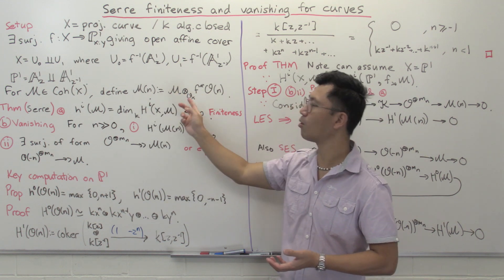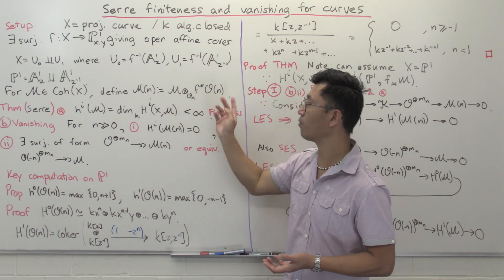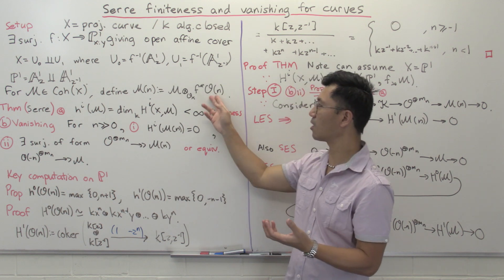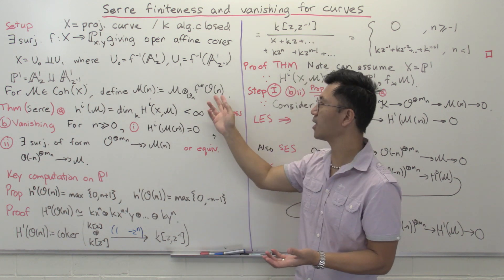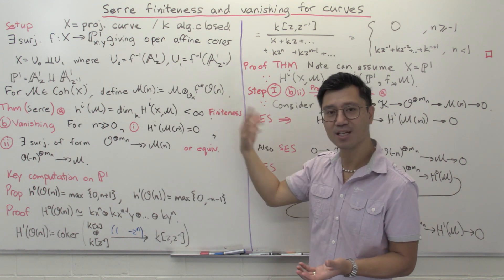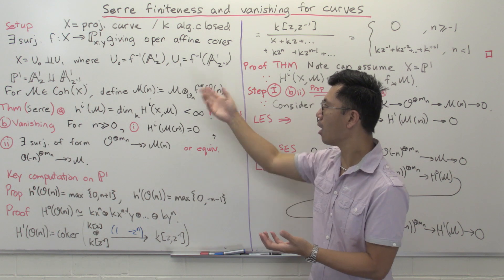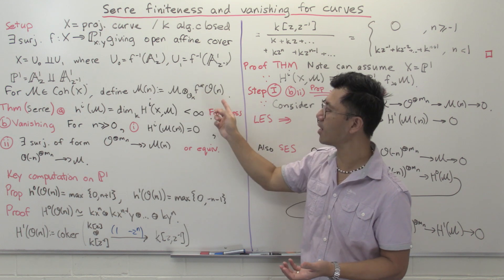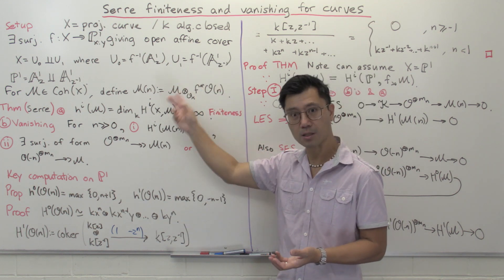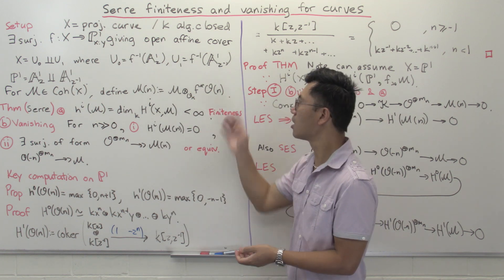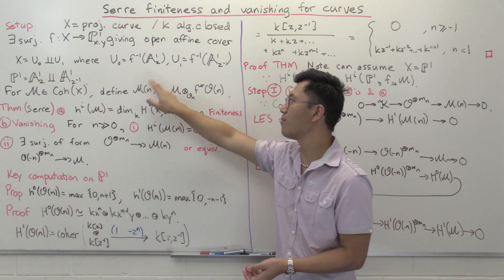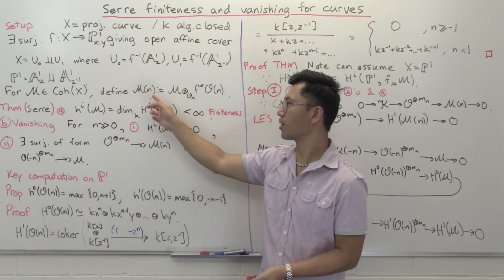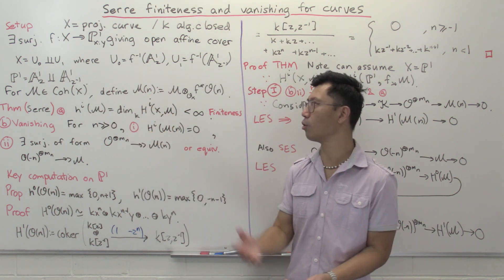Globally it's going to be different — in general non-isomorphic. That's called twisting by n. The inverse of O(n) is O(-n), and when you tensor O(n) and O(-n) together you get O, which is the identity in this monoidal category. So tensoring by this invertible sheaf is an invertible operation — it gives you an equivalence of categories. In particular it's exact. We can go backwards and recover the original M by tensoring with f^* O(-n).